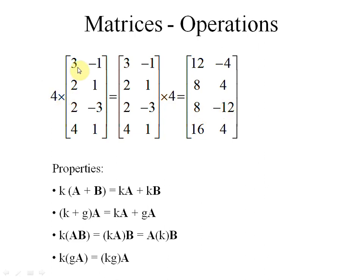If 4 is multiplied with a matrix containing elements 3, −1, 2, 1, 2, −3, 4, 1, then 4 is multiplied with each element: 4×3=12, 4×(−1)=−4, 4×2=8, 4×1=4, 4×2=8, 4×(−3)=−12, 4×4=16, 4×1=4. The same result is obtained whether you multiply the matrix by 4 or 4 by the matrix.